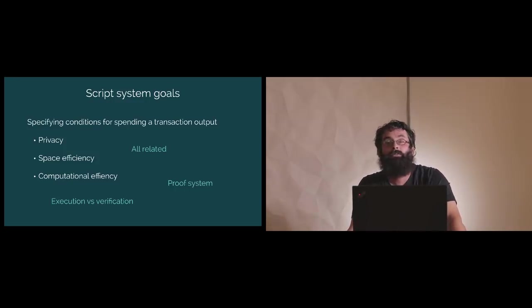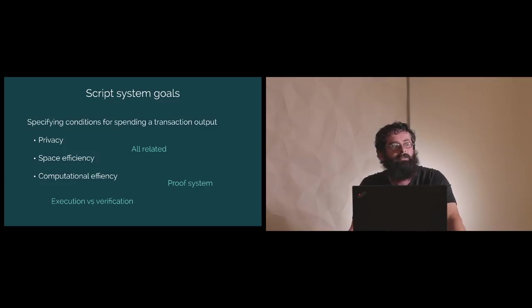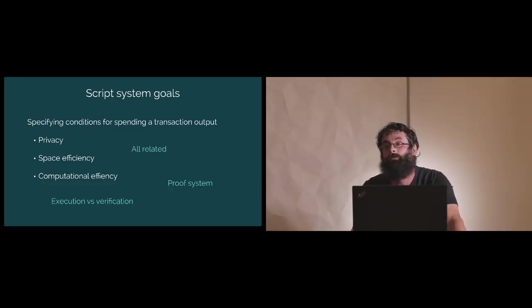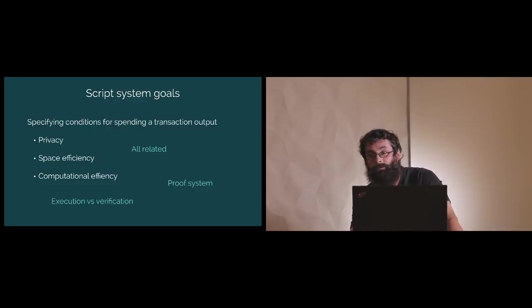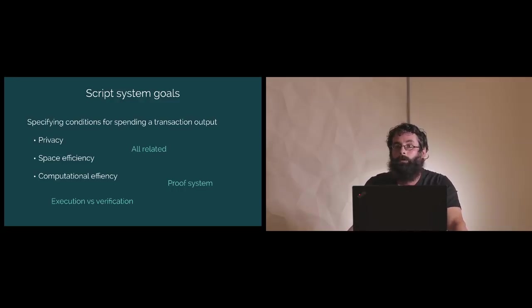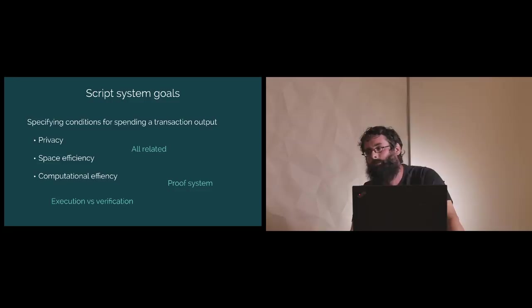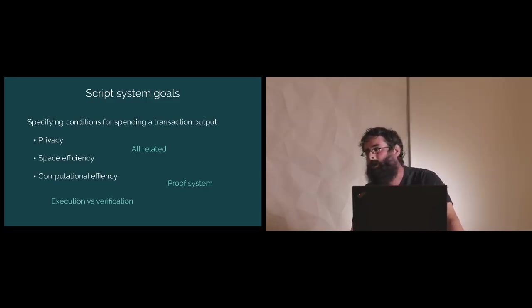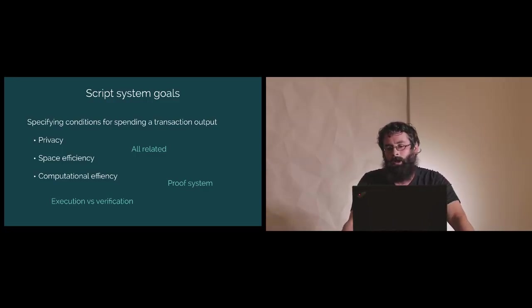You also want to be space efficient because space on the blockchain is expensive — everyone is incentivized to keep things as small as possible. And of course there's also computational efficiency. We want things that are efficient to verify so that it is easy to run full nodes to fully audit the system. All of these concerns are related. Generally if you try to reveal less about what you're doing, you'll also be saying less and using less storage, and as a result there will be less data to verify.